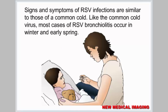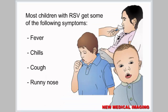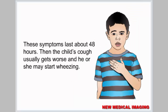Signs and symptoms of RSV infections are similar to those of a common cold. Like the common cold virus, most cases of RSV bronchiolitis occur in winter and early spring. Most children with RSV get some of the following symptoms: fever, chills, cough, and runny nose. These symptoms last about 48 hours, then the child's cough usually gets worse and he or she may start wheezing.